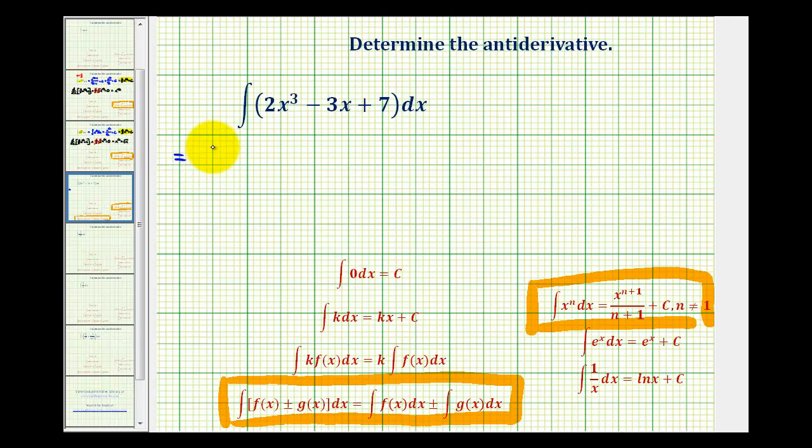This is equal to the integral of 2x cubed with respect to x minus the integral of 3x with respect to x plus the integral of 7 with respect to x.